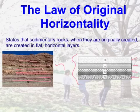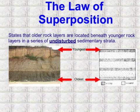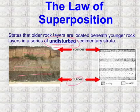That's because gravity makes them do that. The law of superposition states that older rock layers are located beneath younger rock layers in a series of undisturbed sedimentary strata. The key thing to remember is that this only applies to undisturbed strata. We're going to see some diagrams with bending and folding — those have been disturbed. So the law only applies where the oldest layers are at the bottom and the youngest are at the top.